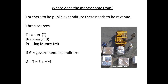Most of us are aware of paying income tax on earnings and value-added tax, VAT, on purchases. But there are many other forms of taxation. The government can also borrow money, either internally or externally, and it can print money.